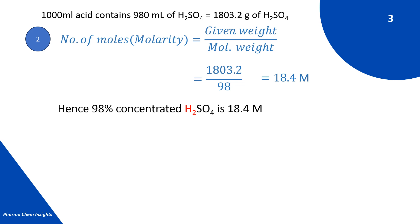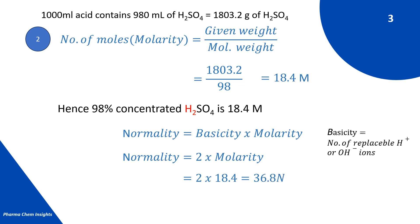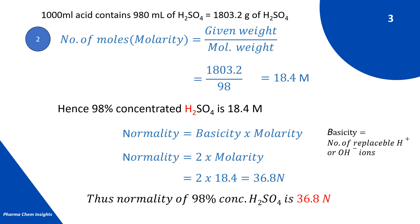For calculating normality, we use the formula: normality = basicity × molarity. Basicity is the number of replaceable H⁺ or OH⁻ ions. In H₂SO₄ we have 2 replaceable H⁺ ions. Therefore, normality = 2 × 18.4 = 36.8 normal. Thus, the normality of 98% concentrated H₂SO₄ is 36.8 normal.